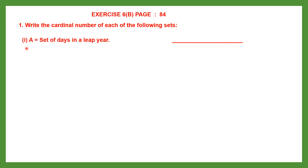Question 1, Set A is a set of days in a leap year. A leap year has one extra day than the normal days. So the number of days in a leap year is 366. We write N of set A — that is, the cardinal number of set A — is 366.